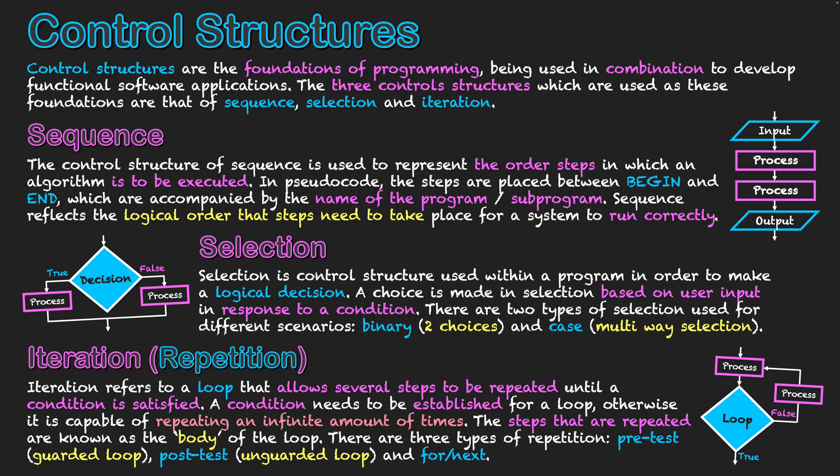There are three types of repetition. There's pre-test repetition, which is known as a guarded loop, where the test takes place at the beginning of the loop, and potentially you can avoid the loop steps if the criteria is satisfied straight away, which is why you would use a pre-test loop in this case.